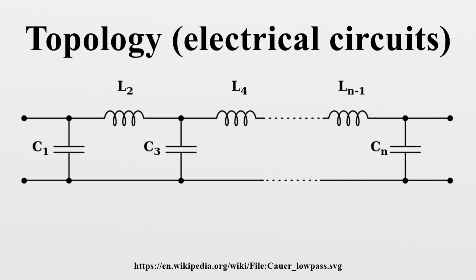The circuit diagrams in this article follow the usual conventions in electronics. Lines represent conductors. Filled small circles represent junctions of conductors. Open small circles represent terminals for connection to the outside world. In most cases, impedances are represented by rectangles. A practical circuit diagram would use the specific symbols for resistors, inductors, capacitors, etc., but topology is not concerned with the type of component in the network, so the symbol for a general impedance has been used instead.